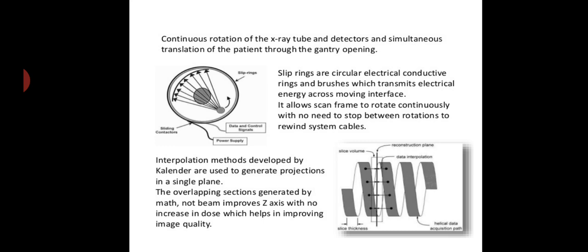Continuous rotation of x-ray tube detectors and simultaneous translation of patient through the gantry opening. Slip rings are circular electrical conductive rings and brushes which transmit electrical energy across the moving interface. It allows scan frame to rotate continuously with no need to stop between rotations to rewind cable systems. Interpolation methods developed by calendar are used to generate projections in a single plane. The overlapping sections generated by math, not beam, improves z-axis with no increase in dose, which helps in improving image quality. The slip rings used in the helical or spiral CT allows the continuous rotation of the x-ray tube without tangling of cables. Thus, the wear and tear of the cables used in the scanner can be reduced or can be stopped, and thus the scan time is also reduced in spiral or helical CT due to the slip ring technology.